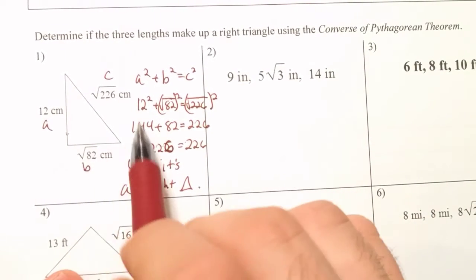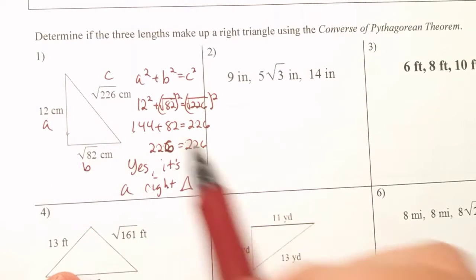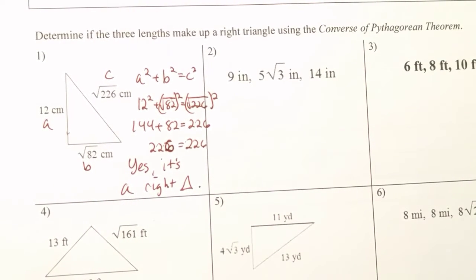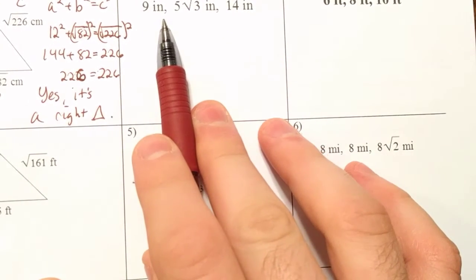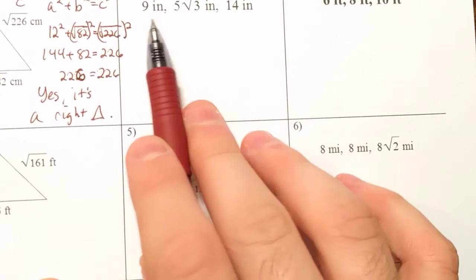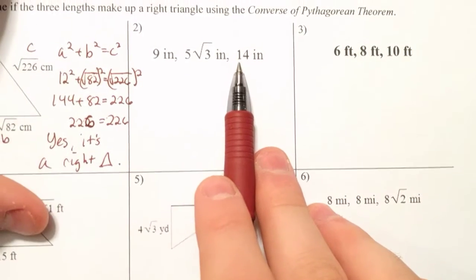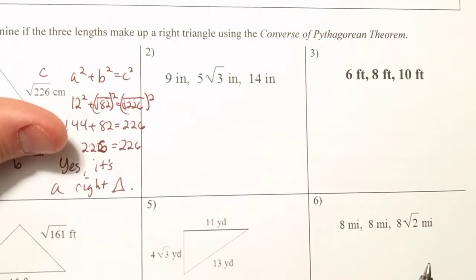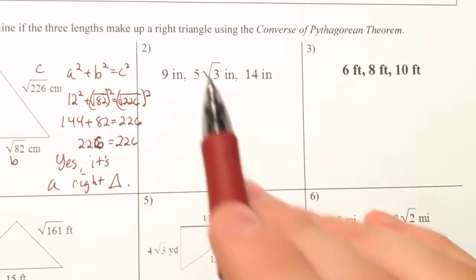Now, if this was in a diagram, you might be confused as to which one's going to be your hypotenuse. So let's look at an example like this one here, number 2. You have 9, 5 root 3, and 14. Now, between these two numbers, 9 and 14, 14 is going to be the larger one. So we probably would pick that over 9 for our hypotenuse. However, do we know exactly what 5 root 3 is?